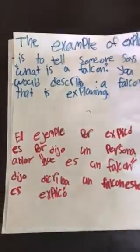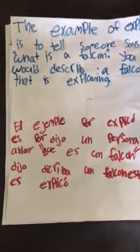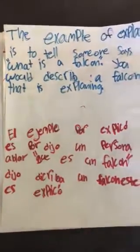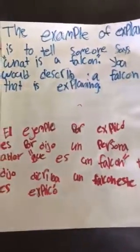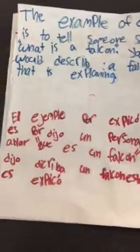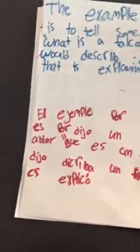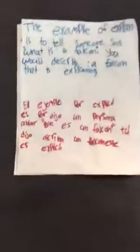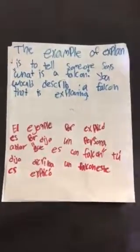The example of explain is to tell someone what is a falcon. You would describe a falcon — that is explaining. El ejemplo por explicó es por decir a una persona que es un falcón. Tú describes a un falcón, esto es explicó.